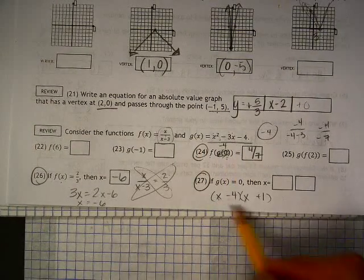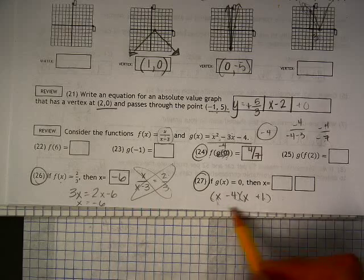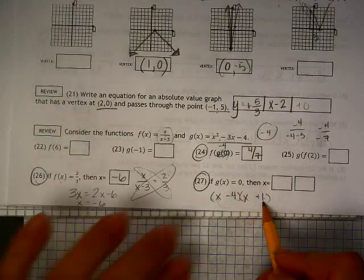So this will be x squared. This will be negative 4 plus 1 is negative 3. And negative 4 times positive 1 is that.